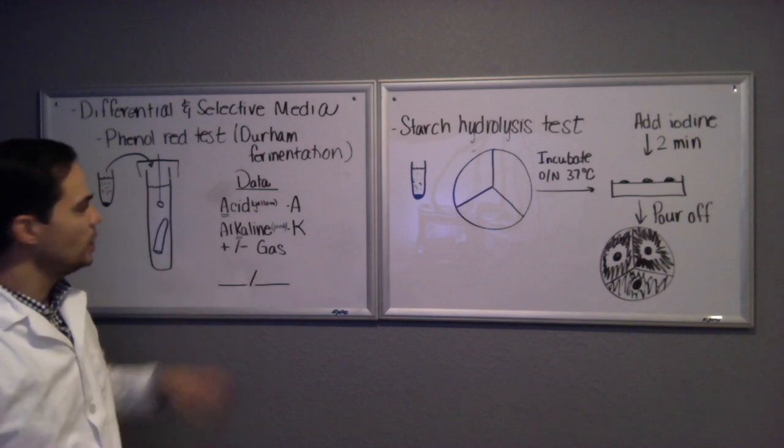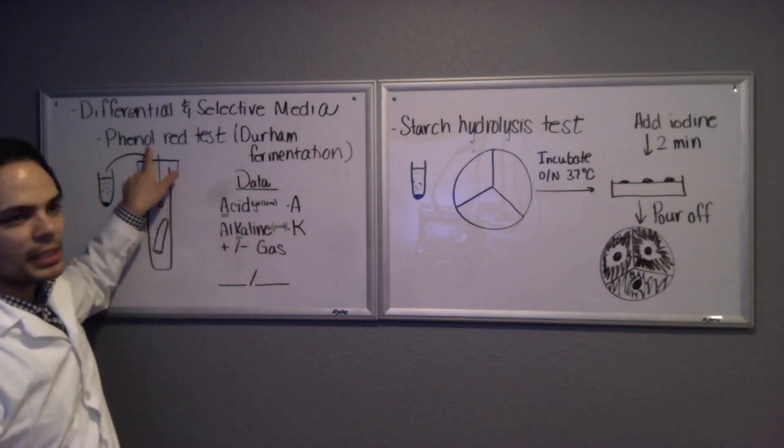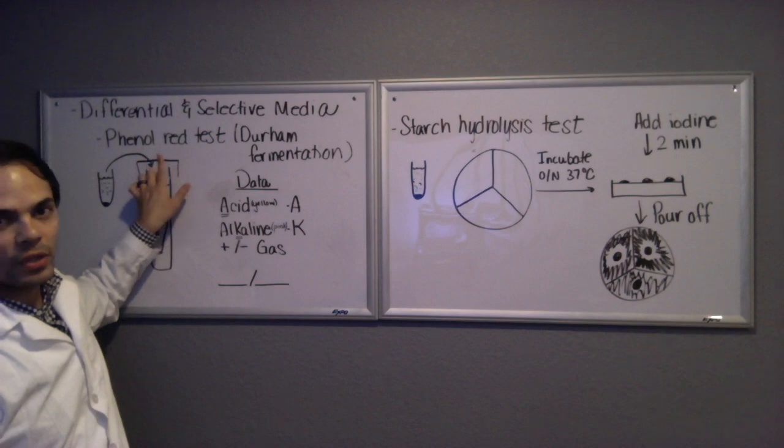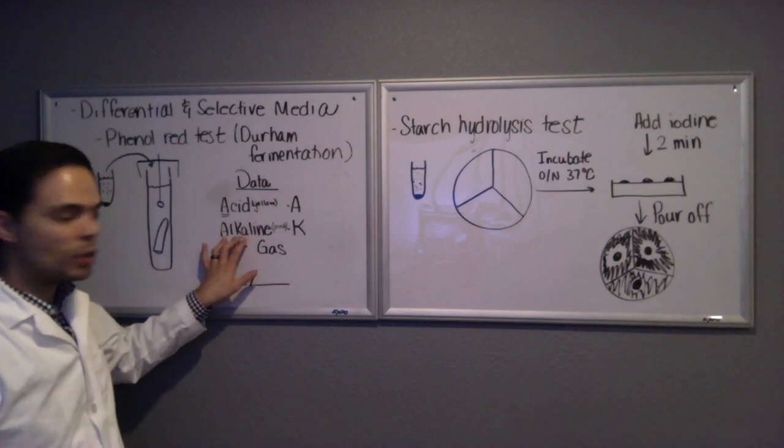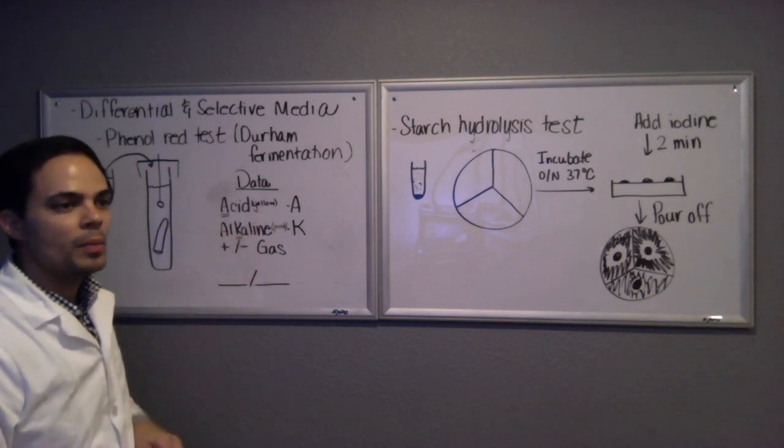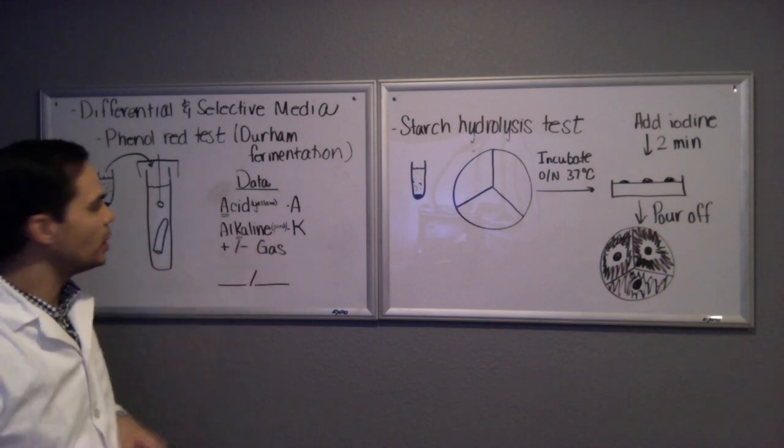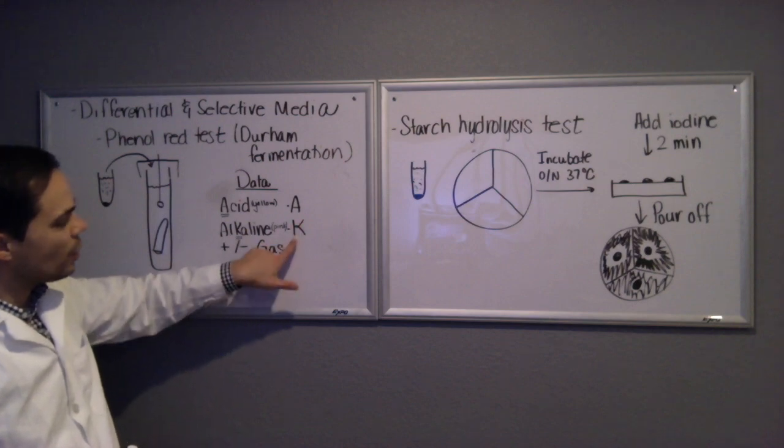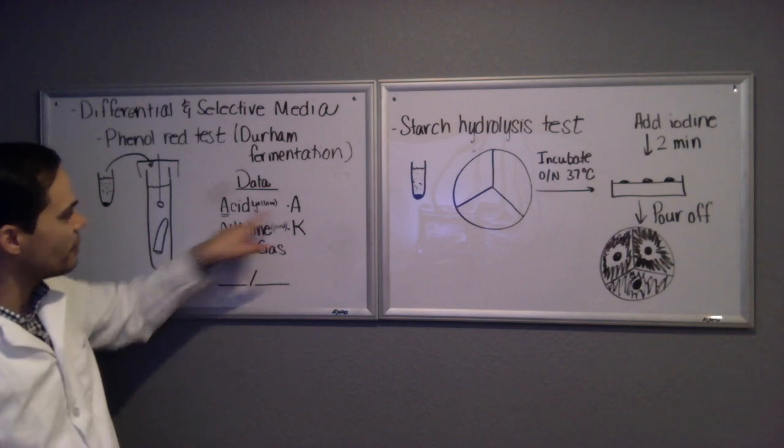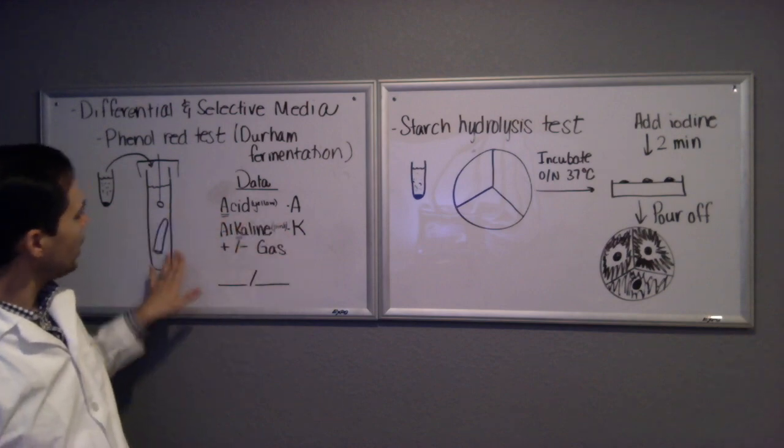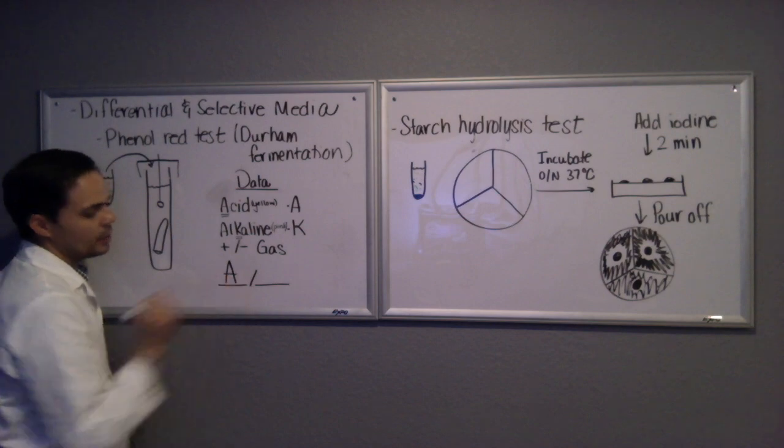If it turns pink, that means that instead of fermenting and eating the lactose, the bacteria went ahead and ate the peptides in the peptone that was added to this medium, producing ammonium byproducts which are alkaline, and that would turn the phenol red a pinkish color. If that's the case you put K. Why K? Because K for alkaline. A for acid. So the first thing is the color.